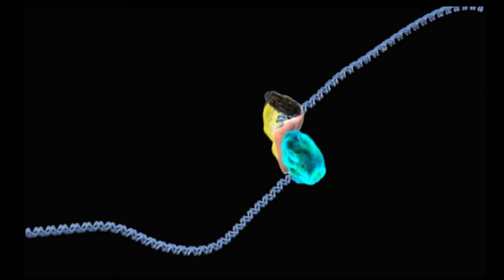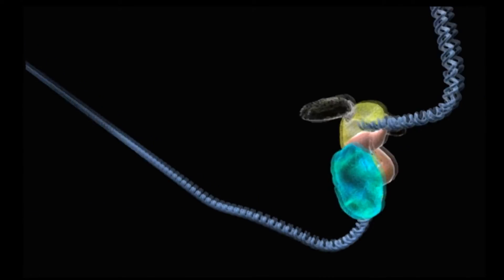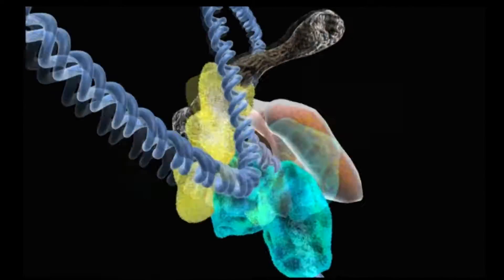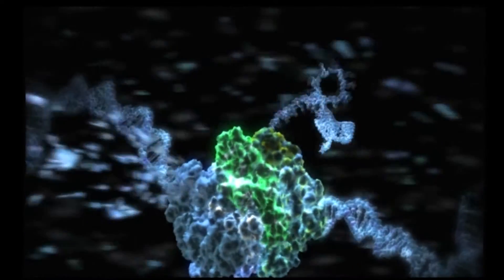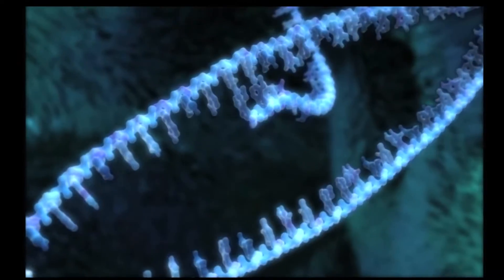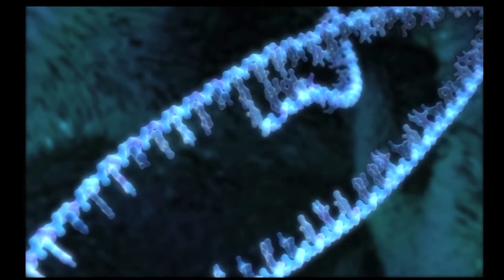First a large protein complex separates the tightly wound strands of the DNA to prepare it to be copied. During this process of transcription, a protein complex called a polymerase produces a single stranded copy of the original instructions.